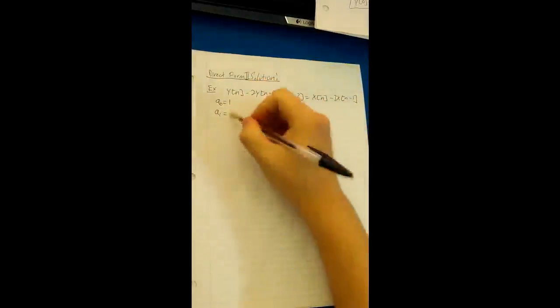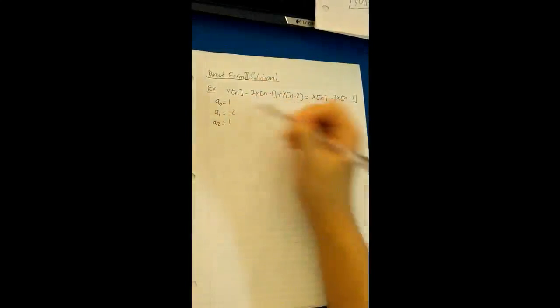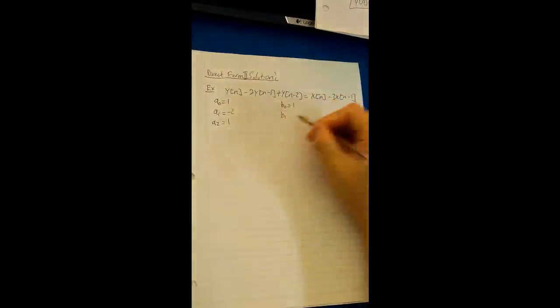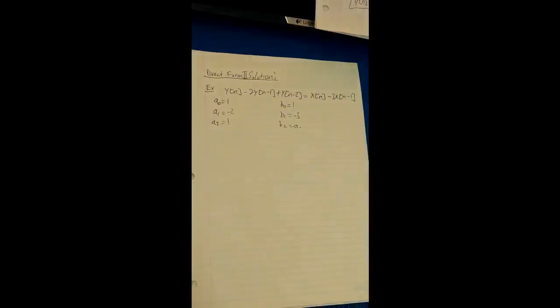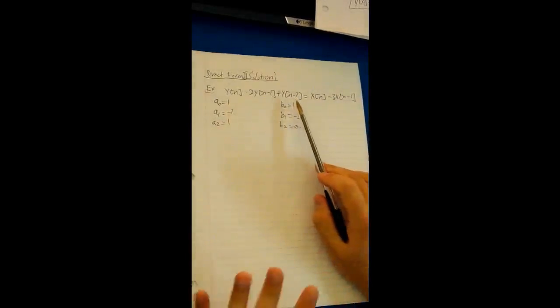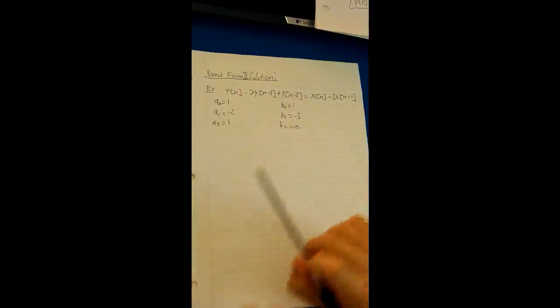So on this side, we're going to find the a coefficients. A0 is always 1. A1 is equal to negative 2. A2 is equal to 1. On the b side: b0 is equal to 1, b1 is equal to negative 3, and b2 is equal to 0. Because this is a second-order system, the highest amount of shift in the y(n) or x(n) terms determines the order of the system.